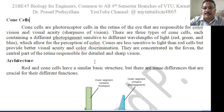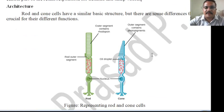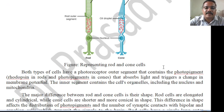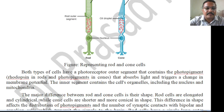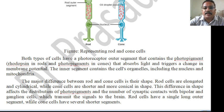Cone cells are concentrated in the fovea, the central part of the retina, responsible for detailed and sharp vision. Looking at the architecture of rod and cone cells, both types have a photoreceptor outer segment containing a photopigment — rhodopsin in rods and a photopigment in cone cells. The inner segment contains cell organelles including the nucleus and mitochondria. The major difference between rod and cone cells is their shape: rod cells are elongated and cylindrical while cone cells are shorter and more conical.